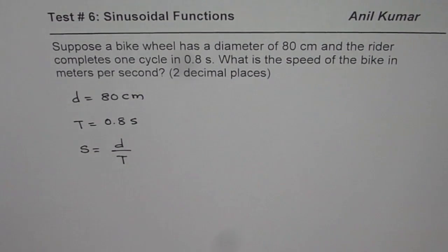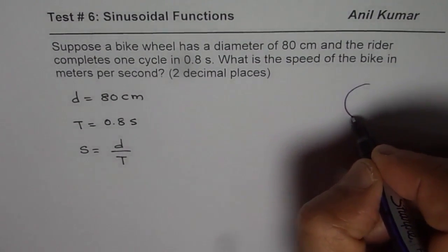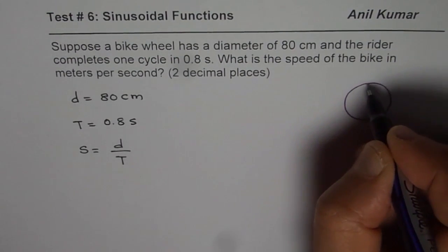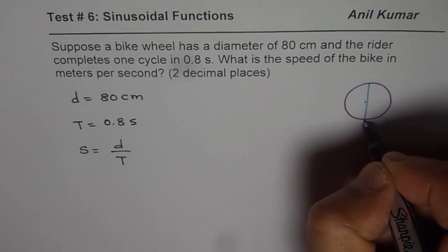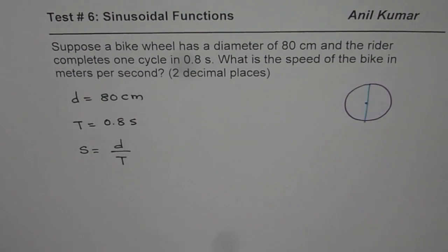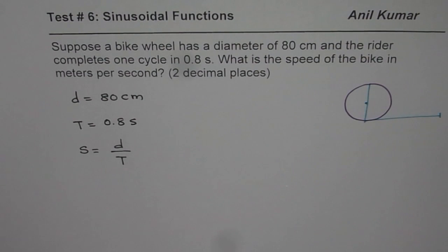In one cycle, how much distance will the bike cover? This is the wheel of the bicycle, whose diameter is given to us as 80 cm. How much distance is it going to cover in one cycle?